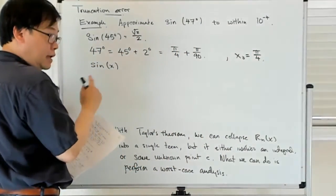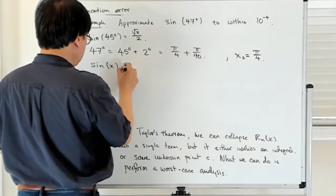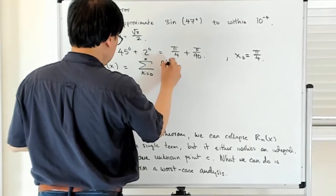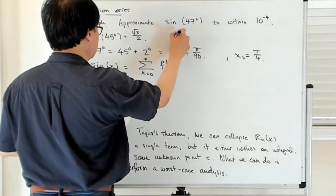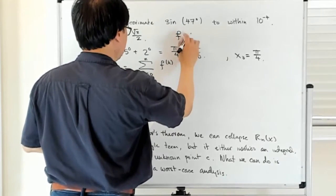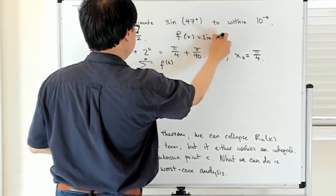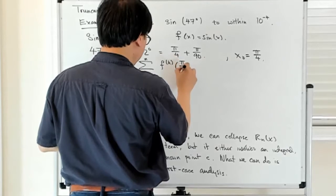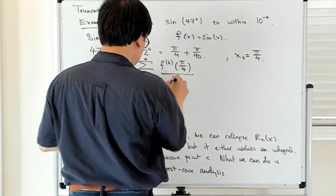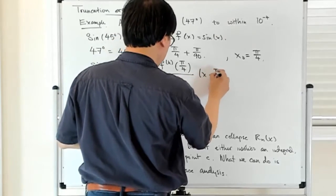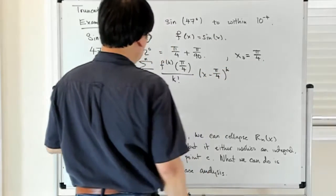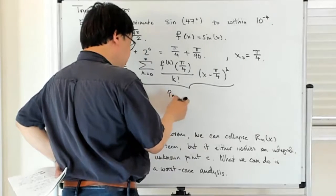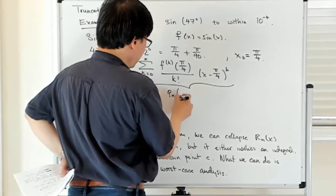And I'm going to write sine of x as a Taylor series about π over 4. So that's going to be the sum from k equals 0 to n of the kth derivative of f, and f is just f of x equals sine of x. And this is going to be evaluated at π over 4, which is x0, divided by k factorial, and then I have x minus π over 4 to the kth power. So this is just the Taylor polynomial of degree n evaluated at π over 4.